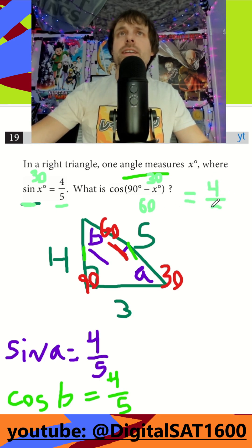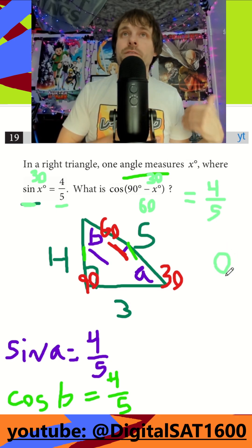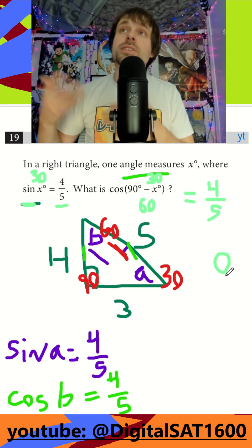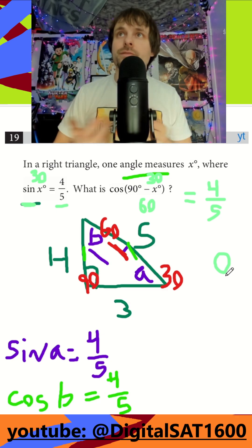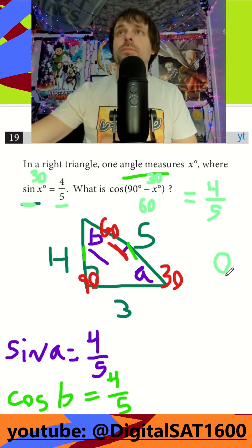I've also seen questions like this where the answer will also be 0, because they'll say something like sine of X equals 4 fifths, subtracting cosine of 60, which would also be 4 fifths, which would get a 0. But yeah, that's it for these rules.